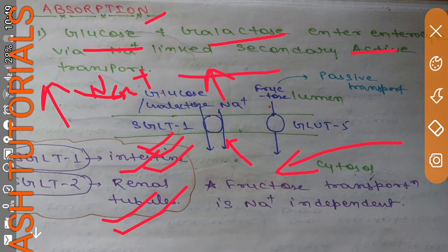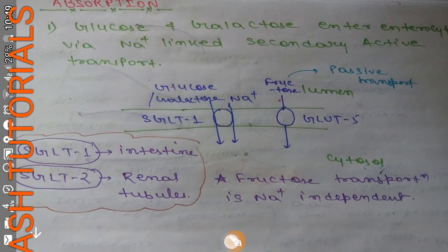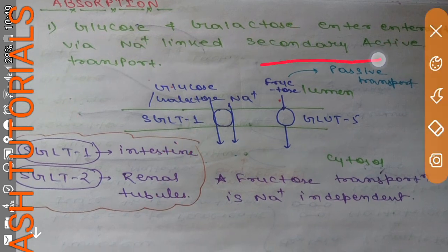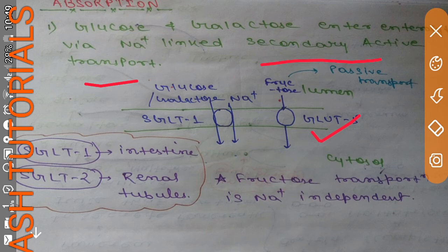So glucose and galactose enter the enterocytes via sodium-linked secondary active transport. Coming to the transport of fructose — fructose is transported into the enterocyte by GLUT5, which stands for glucose transporter 5. This is responsible for facilitated diffusion, which is a type of passive transport.